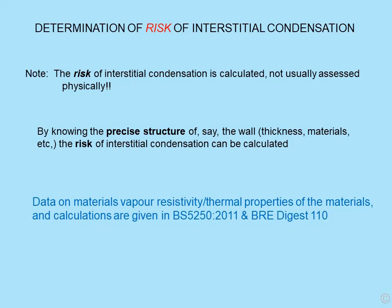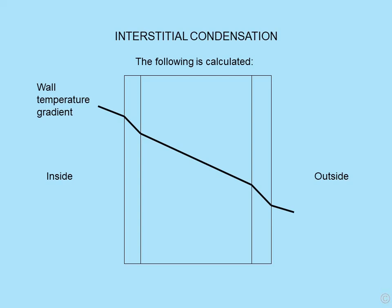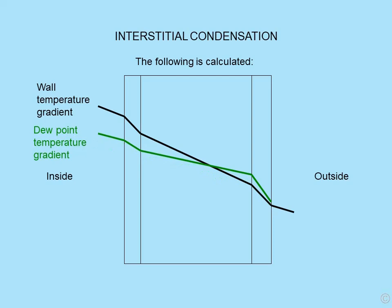The risk of interstitial condensation is calculated rather than assessed physically, using data on the precise structure of the wall — its materials and thickness. Data on vapor resistivity is given in British Standard 5250:2011 and Building Research Digest 110. By entering figures into equations knowing the wall construction, we can calculate a wall temperature gradient and a dew point temperature gradient through the wall. If those two gradients cross, we get interstitial condensation.